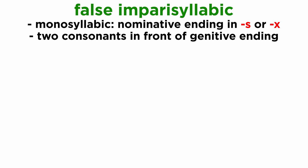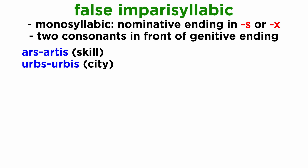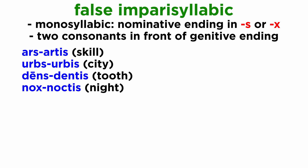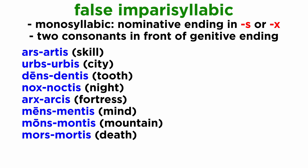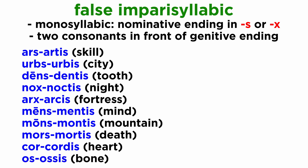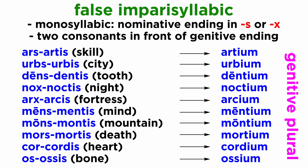They are also called false imparasyllabic: ars artis, urbs urbis, dens dentis, nox noctis, arx arcis, mens mentis, mons montis, mors mortis, cor cordis, os ossis. Their genitive plural forms will be artium, urbium, dentium, noctium, and so forth.